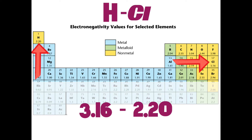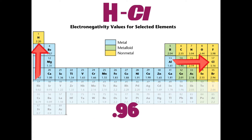If you look at the values for each of these elements, the value for chlorine is 3.16 and we're going to subtract that from the value of hydrogen, which is 2.2. And we're going to get a difference, an electronegativity difference of 0.96.